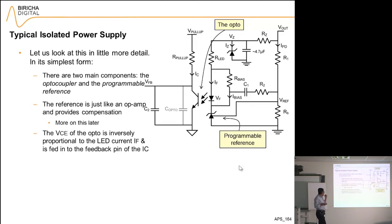The opto is the bit that provides the isolation. The VCE, the collector-emitter voltage of the opto, as you can see from this diagram, is in fact inversely proportional to the LED current. So here is my LED current.